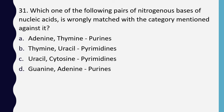Question 31. Which one of the following pairs of nitrogenous bases is wrongly matched with the category? Adenine and thymine — purines; thymine and uracil — pyrimidines; uracil and cytosine — pyrimidines; guanine and adenine — purines. The answer is option A: adenine and thymine is wrongly matched — adenine is a purine whereas thymine is a pyrimidine.